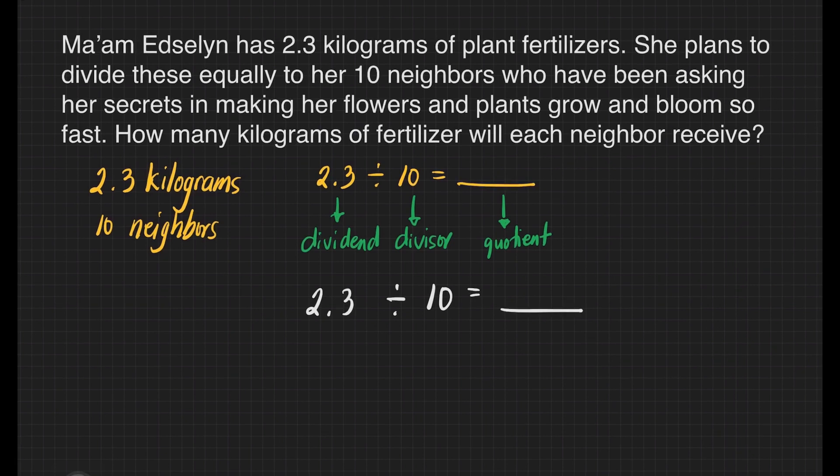We can follow that. Let's observe our divisor. It has one zero. That means we will move one decimal place to the left of our dividend. That's going to be here. It means our answer for this question is 0.23. Each of the neighbors of mom Edselin will receive 0.23 kilograms of plant fertilizer. And we're done.